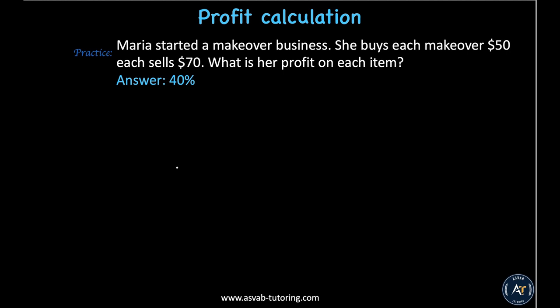Practice problem: Maria started a makeover business — she buys makeup for $50 and sells for $70. What is her profit percentage on each item? Follow the same method and you should get 40 percent as the answer.